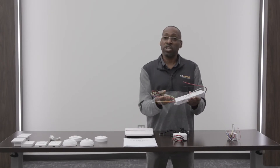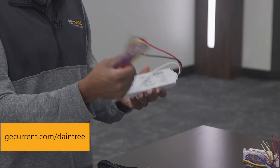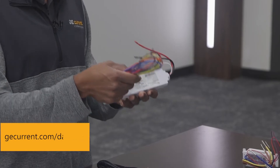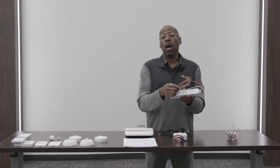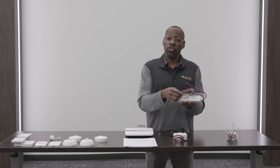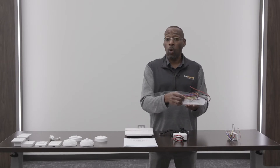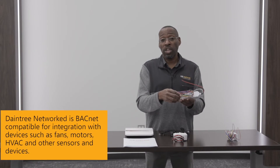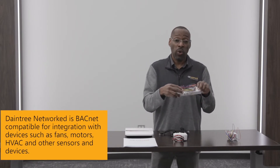All these different wires do something different. I will refer you to the current website to understand what each one of these configurations does. In essence, they will allow the system to dim the lights up and down. You can control occupancy sensing, use them for switching on different loads, turn them on and off — things of that nature to control different devices. So this not only does lighting but also handles some other controls as well.